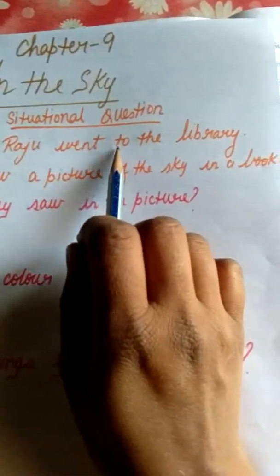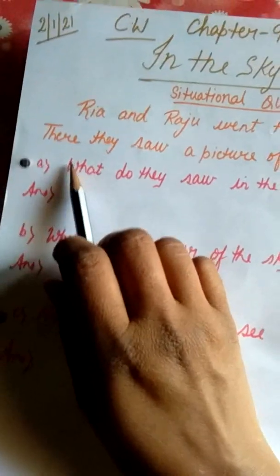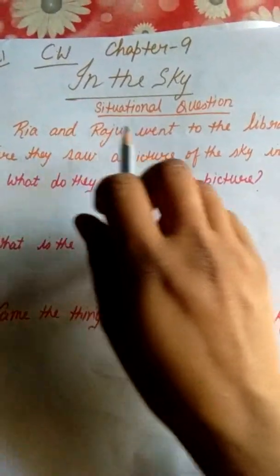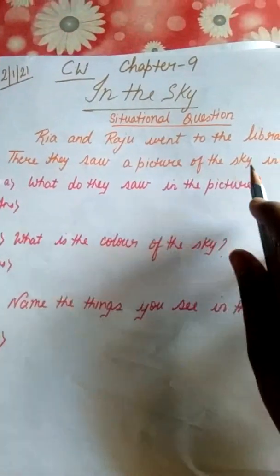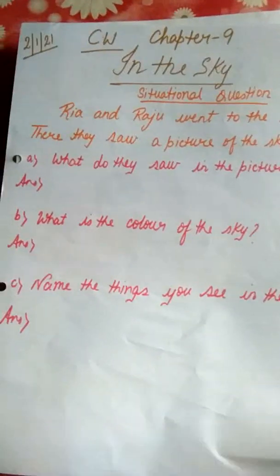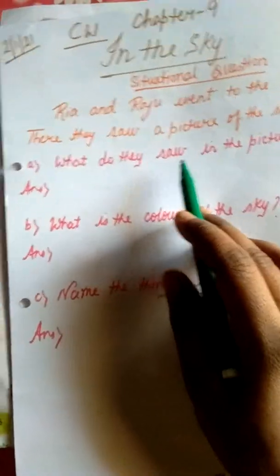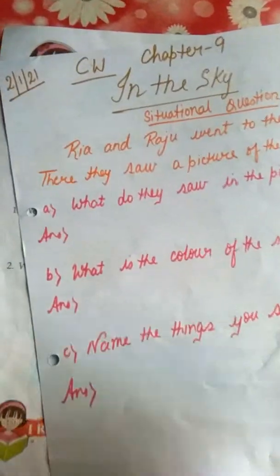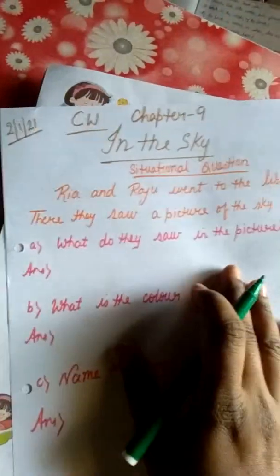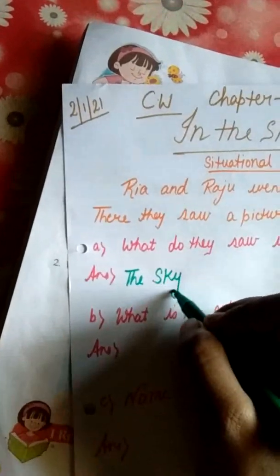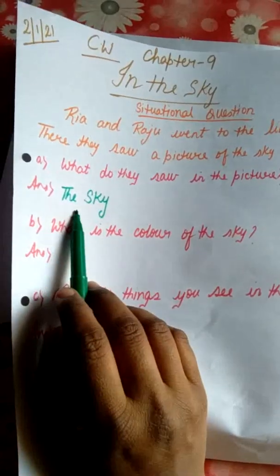Rhea and Raju went to the library. There they saw a picture of the sky in a book. Rhea and Raju went to the library and they both saw a picture of the sky in a book. So now we will come to know what did they see in the picture? They saw the picture of the sky. So you all will write here: the sky.